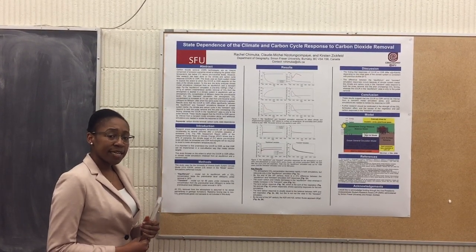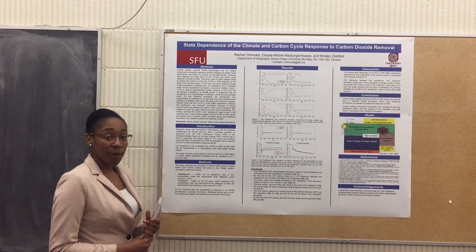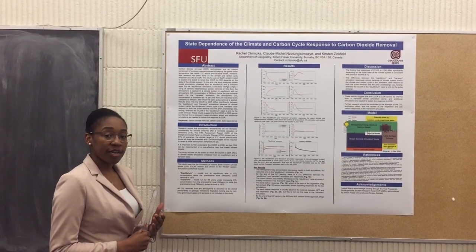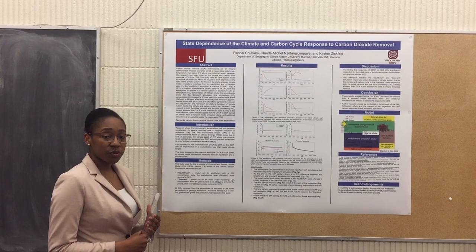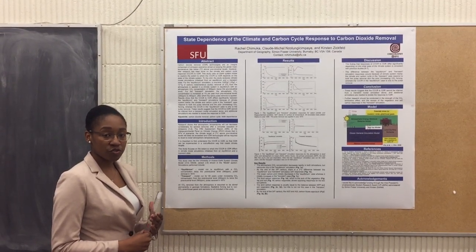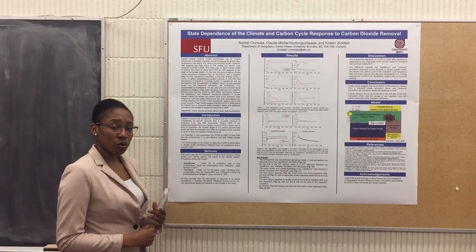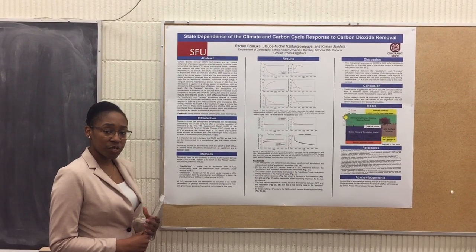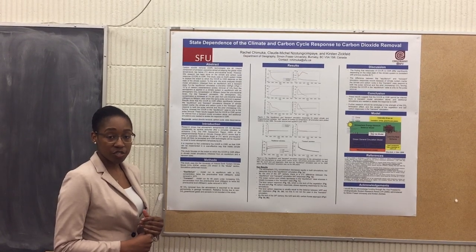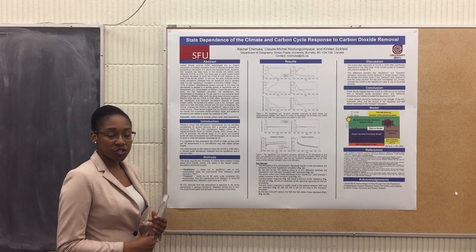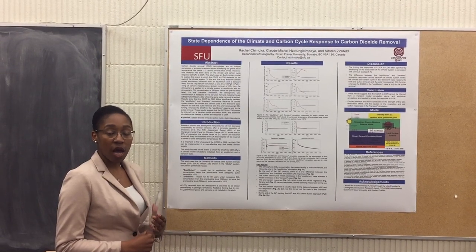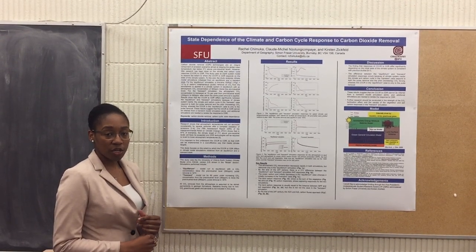In 2015, nations gathered together to sign the Paris Agreement, which stipulated that they would constrain atmospheric warming to 2 degrees Celsius above pre-industrial levels by the year 2100. Recent research shows that decreasing carbon dioxide emissions to zero will not be enough to reach this climate target. We will also need to start taking out carbon dioxide from the atmosphere using carbon dioxide removal technologies.